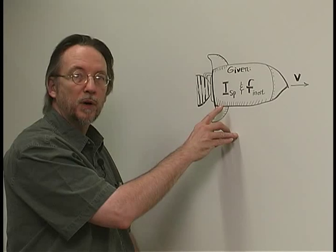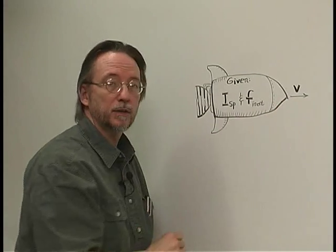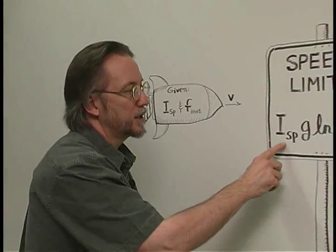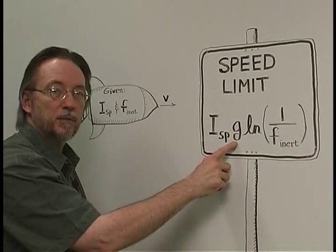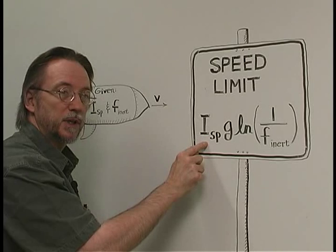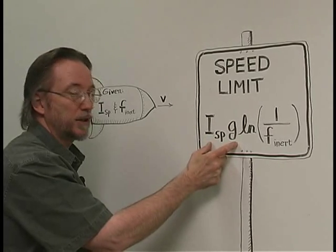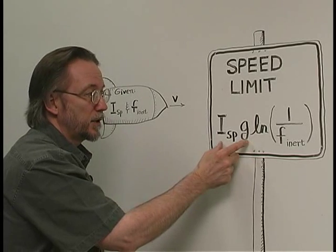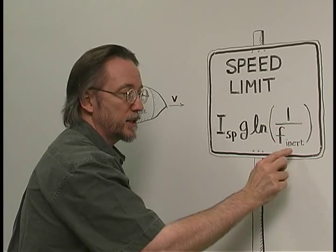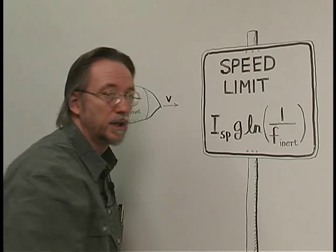For a given specific impulse and inert mass fraction, using the rocket equation we can find that there is a speed limit that that vehicle can attain. And that speed limit is given by this formula, where we have ISP times the standard acceleration of gravity. And when you multiply these two numbers together, normally ISP is in seconds, and we have, say, meters per second squared. This becomes meters per second. This is a velocity, or effective exhaust velocity, of the propulsion system. So we have a velocity times a non-dimensional term, which is a logarithm, of one over the inert mass fraction. That's the fraction of inert mass divided by the inert mass plus propellant in the rocket.